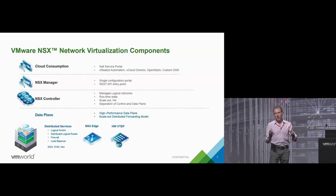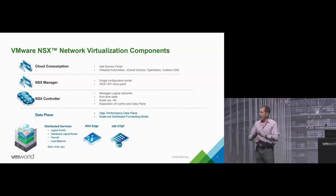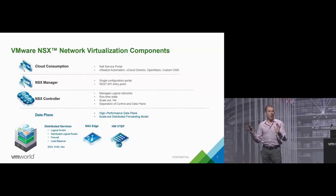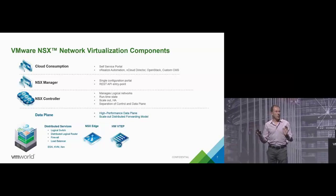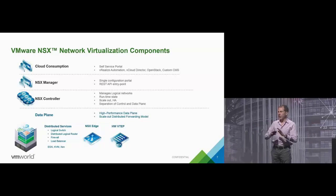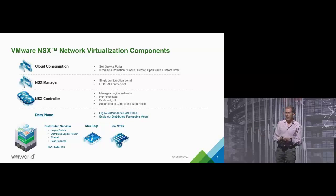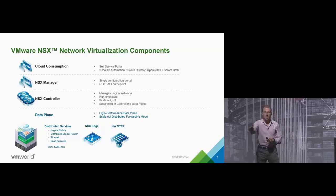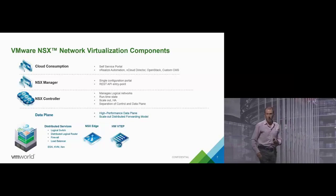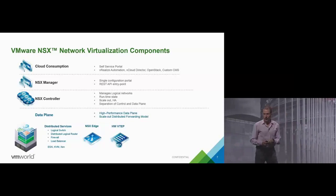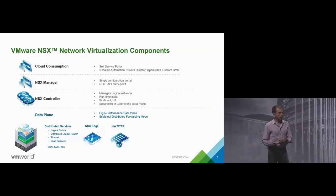Optionally sitting above all of this is a cloud consumption layer. People using NSX for automation typically have some kind of cloud automation layer — the most common is vRealize Automation, VMware's own product; many customers use OpenStack or other systems. From an NSX point of view, we just need something that can make API requests into the NSX Manager. That's the really quick introduction to what NSX looks like architecturally.